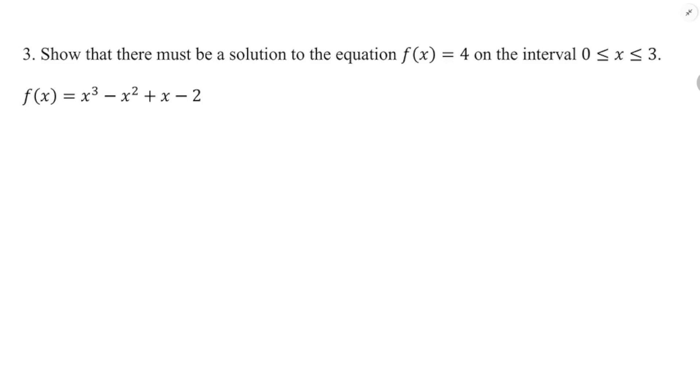But we're talking about intermediate value theorem today, so I need to show you this right now. So if we want to show that there's a solution to f of x equals 4 on the interval 0 to 3, well, I'm going to probably need to check f of 0 and f of 3. So I'm going to plug in 0 to f, and I'm going to get negative 2, and then I'm going to plug in 3 to f, and I'm going to get 3 to the third minus 3 to the 2 plus 3 minus 2. Okay, so that's 27 minus 9 plus 3 minus 2.